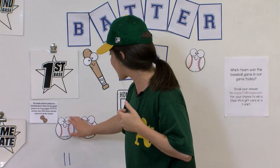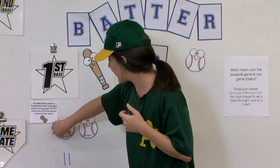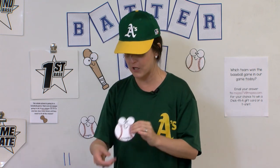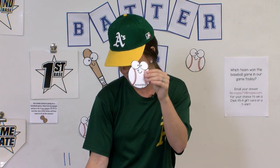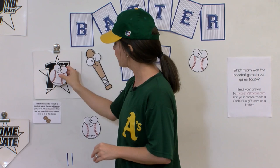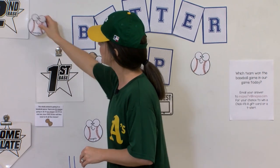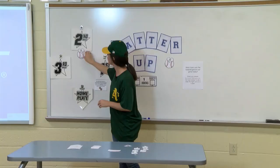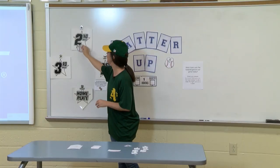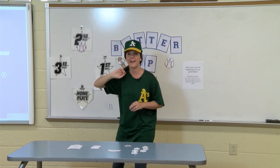That was the Athletics — they're our home team, so they went first. Let's see how many bases they get. They get a double! A double means two bases, so we move them from first to second base. The Athletics are on second base.